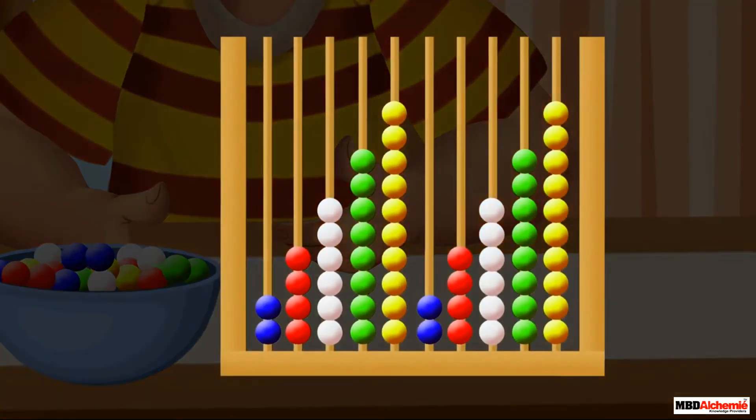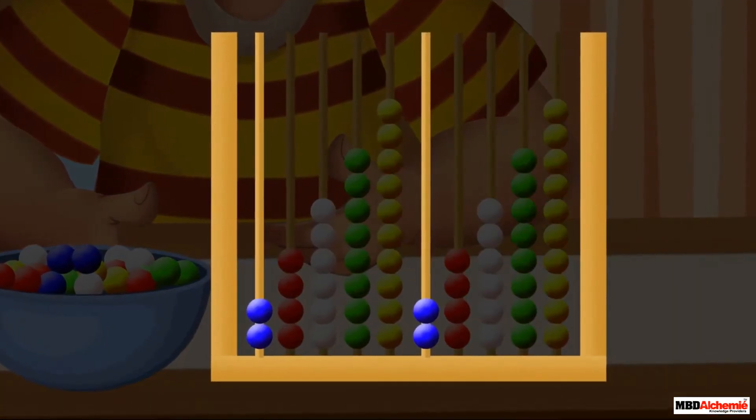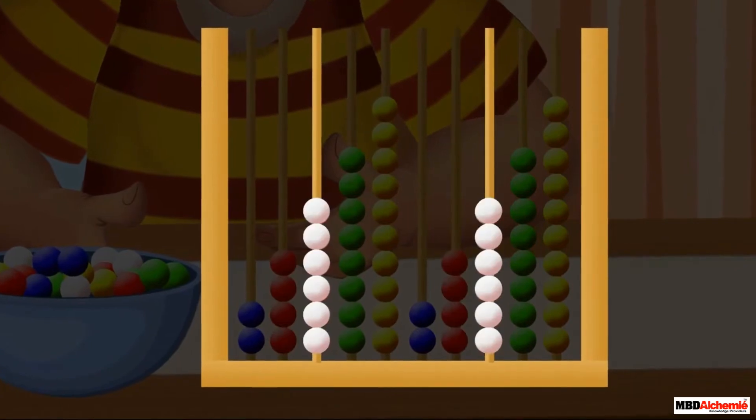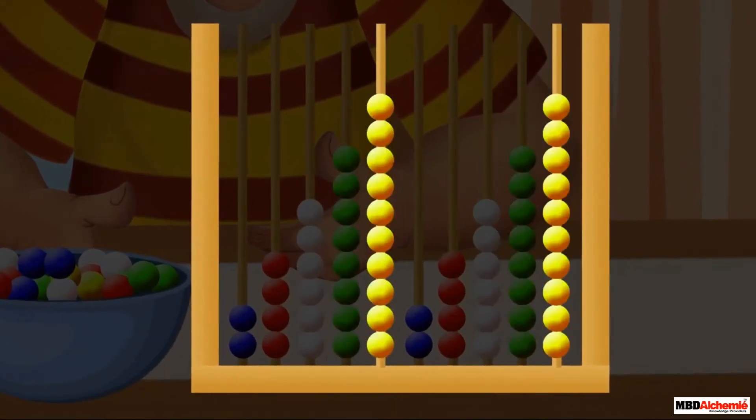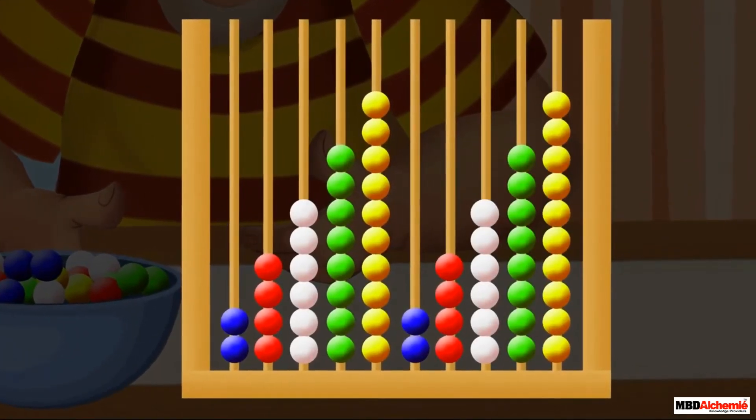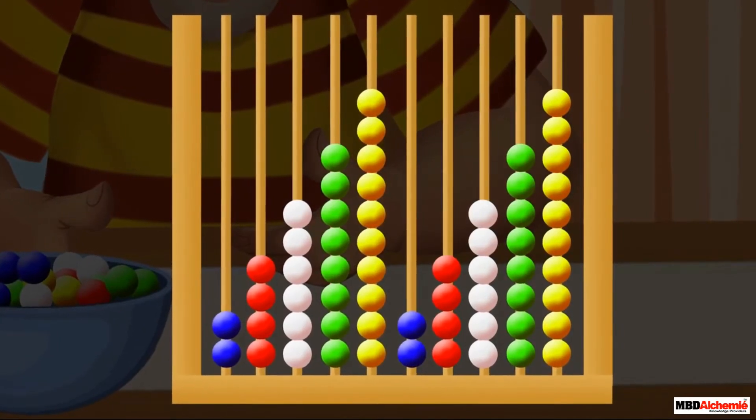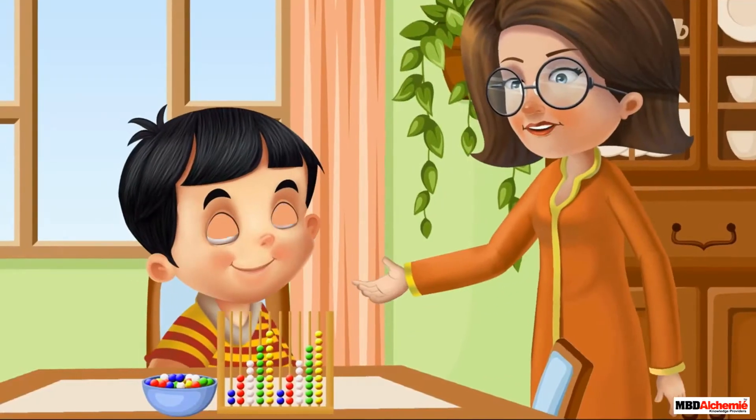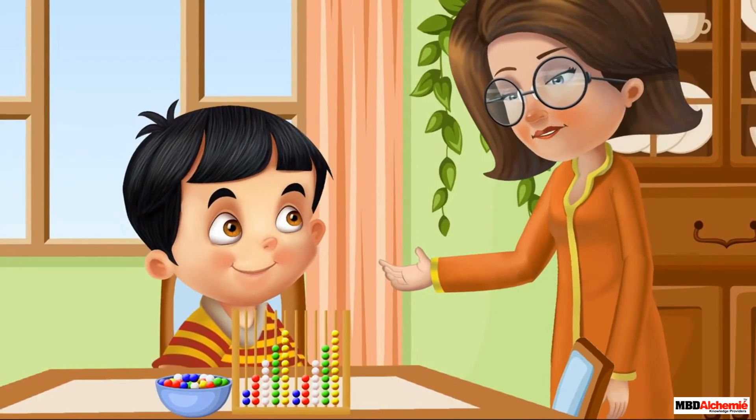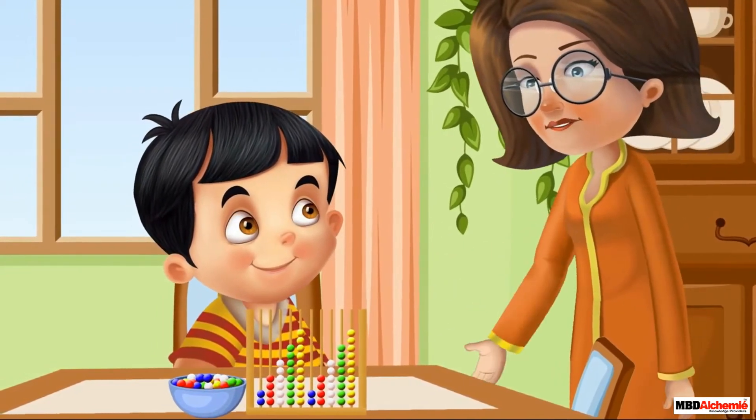See different colors of beads like blue, red, white, green, and yellow. And the color repeats in the same manner again. This is looking good. Now, count the number of beads in different spikes.